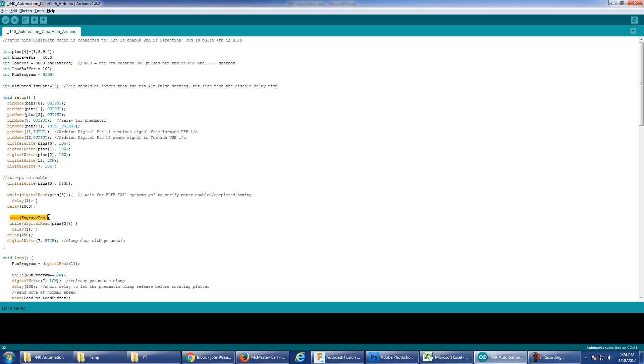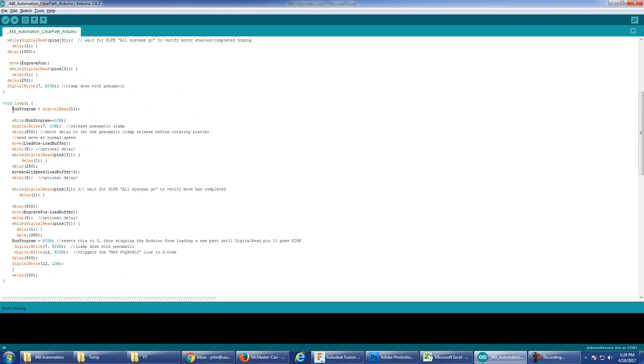When we start the Arduino, it goes ahead and moves to the engraved position and then it clamps down the pneumatic cylinder. Digital pin 7 on the Arduino trips the relay, which actuates the pneumatic solenoid that locks the clamp down. Then it starts looping the code, but I don't want it to loop. I want it to wait. So we do that by saying, look, read digital pin 11 and its default state is high. It's pulled high with a resistor, but when it goes low, go ahead and run the program.